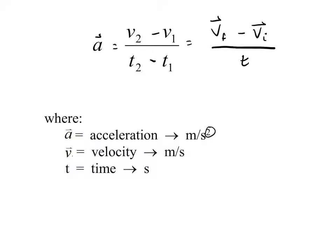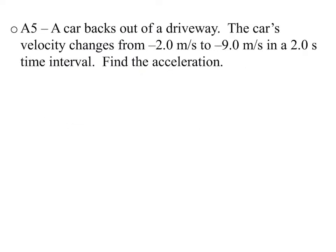Since acceleration is a vector, we have to use velocity — we shouldn't really be using speed here. So direction is going to matter so much. I want to know: is this thing slowing down or speeding up? And the direction it's going in is really going to help. We really need to focus on what direction the velocities are, because that's going to help us find the direction of the acceleration.